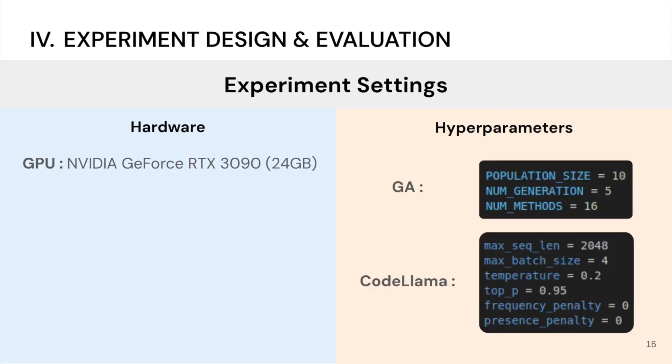For loading and doing inference with the CodeLlama model, the experiments were conducted using a GPU NVIDIA GeForce RTX 3090 with 24 GB.